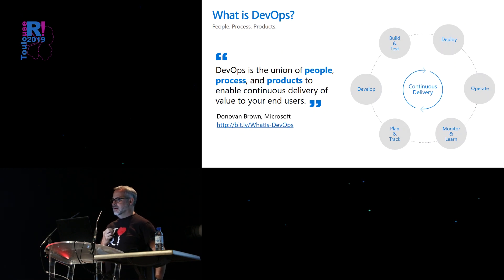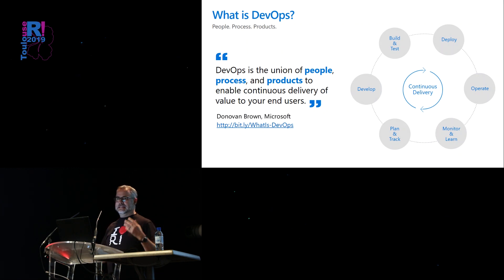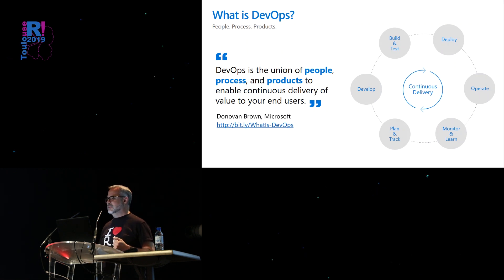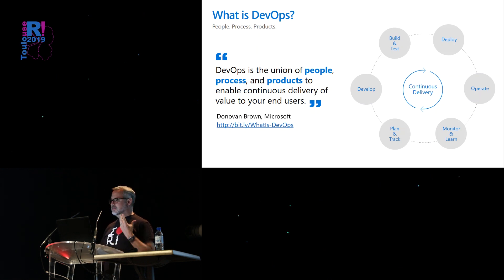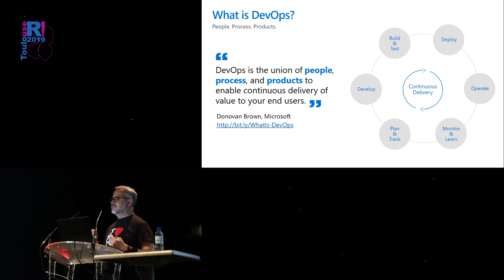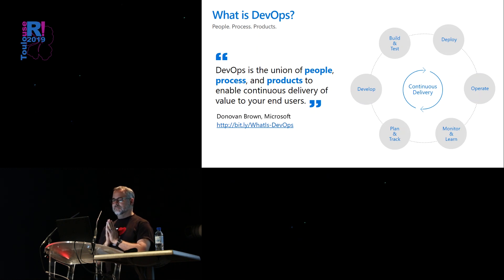You've probably heard about DevOps in several talks during useR this week. If you haven't heard of DevOps, it's basically everything that you need to do to streamline and automate the process of bringing software into production and usable by people. One definition I really like comes from Donovan Brown, one of my colleagues in the Cloud Advocates team at Microsoft. He likes to say that DevOps is the union of people, process, and products to enable continuous delivery of value to your end users.